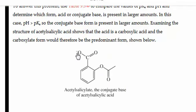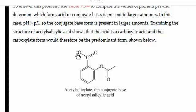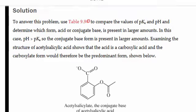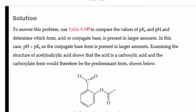The hydrogen on that hydroxyl group is the acidic proton, and when it is removed, the oxygen has a negative charge. This is the structure that will predominate at a pH of 7.4.